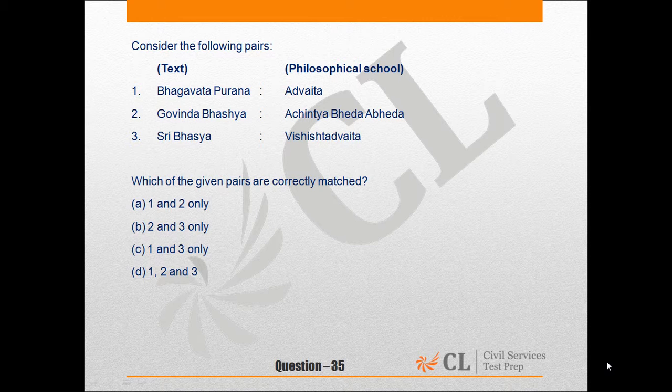Sahi uttar hai B. Keval 2 and 3. Bhagwat Purana, Achintya Bhed Abheda Darshanik Sampradaya ka granth hai. Advaita Darshanik Sampradaya ke pramukh granth Brahma Sutras aur Prasthanatrayi hain.